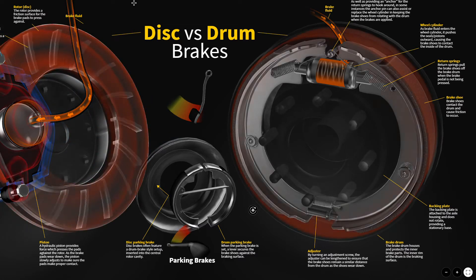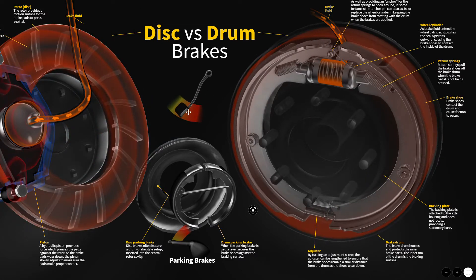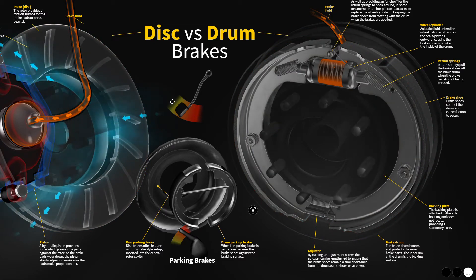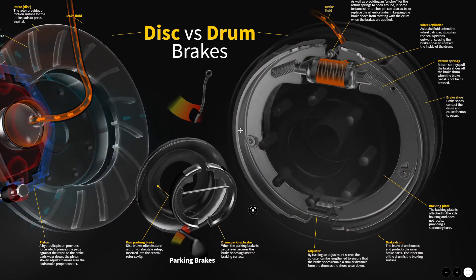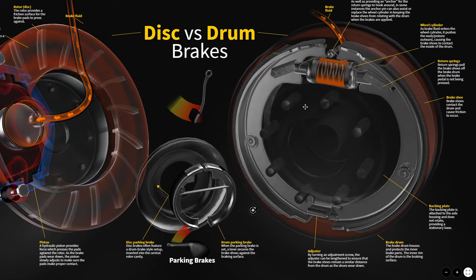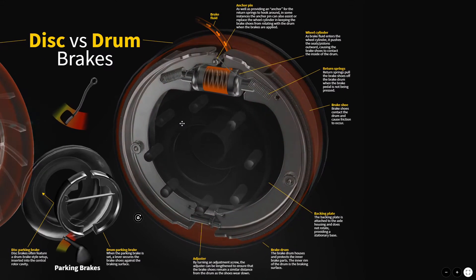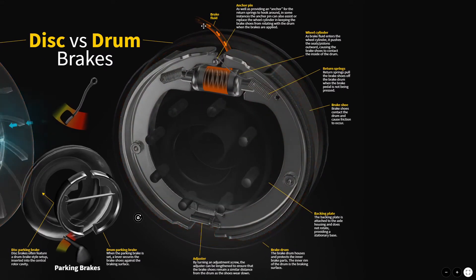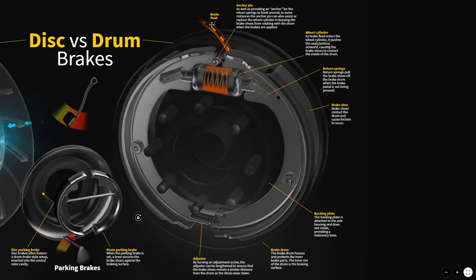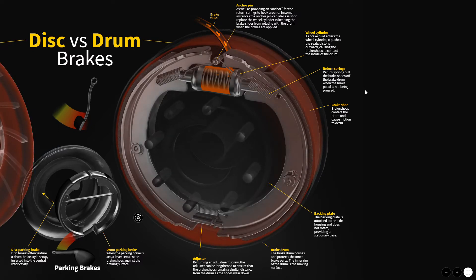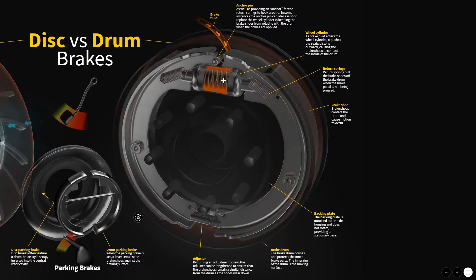We can also see a brake pedal representing our service brakes being applied from the cab. Moving over to our drum brakes — once again starting at the top, we have our brake fluid coming in. On drum brakes, this is often through a metal line, going into the back of our wheel cylinder.